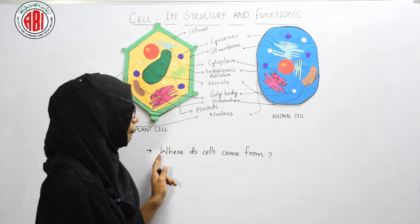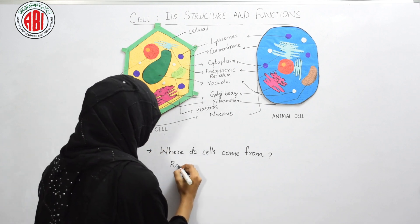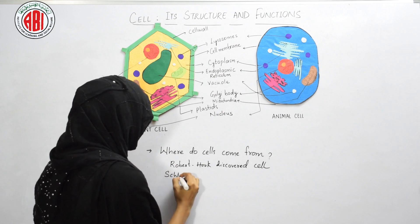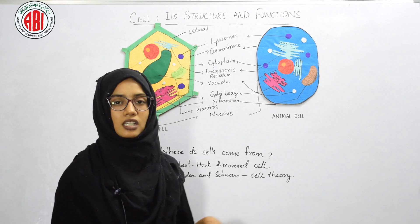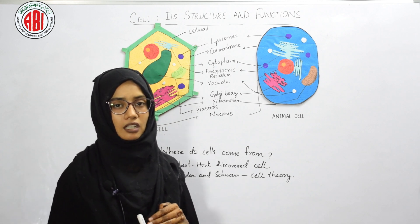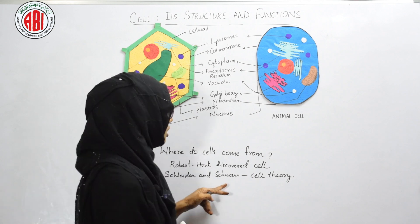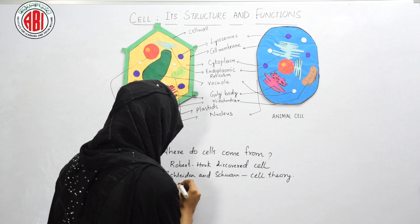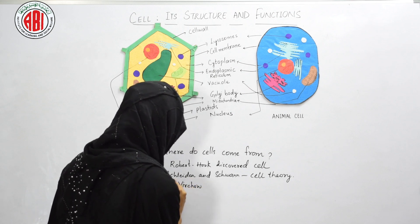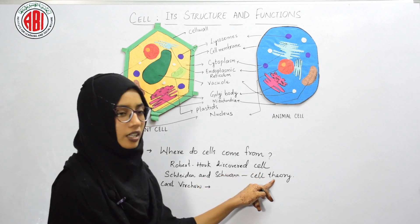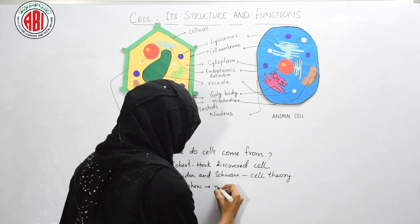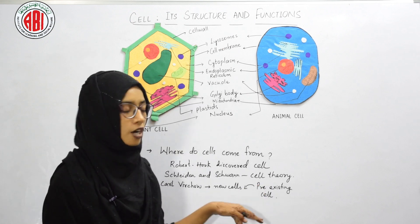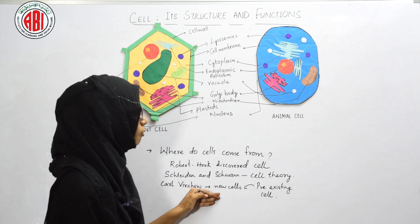Our last topic is: where do cells come from? We know the cell was discovered by scientist Robert Hooke, and cell theory was proposed by two scientists, Schleiden and Schwann. Cell theory explains that all living organisms are made up of cells and each cell has a nucleus, but it did not explain where cells come from. Scientist Karl Virchow modified the cell theory hypothesis and explained for the first time that new cells come from pre-existing cells through cell division.